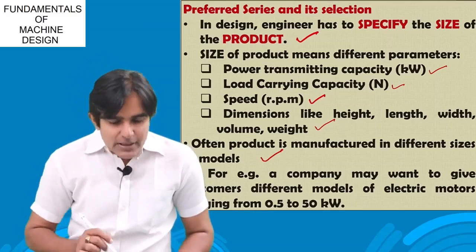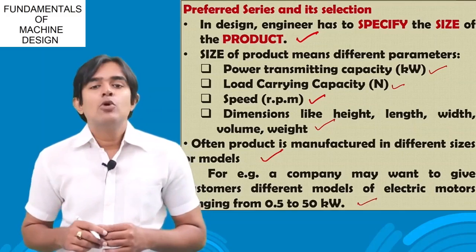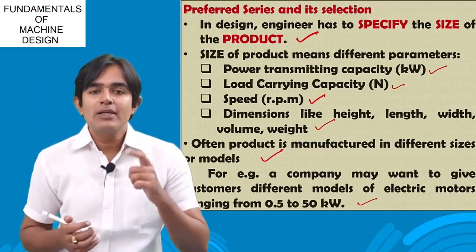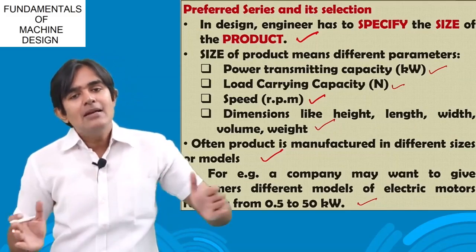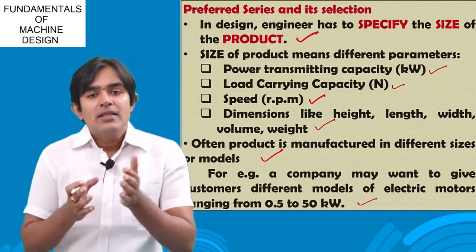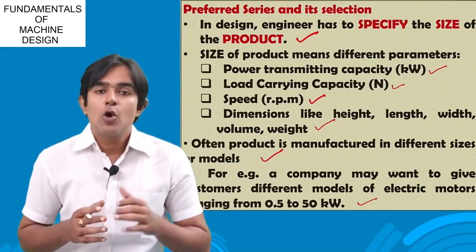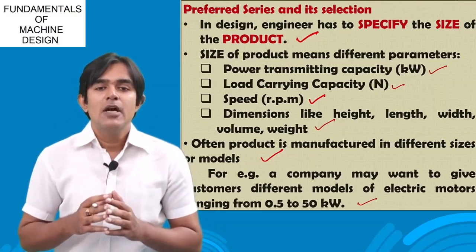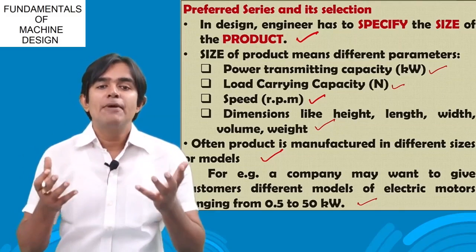A product is manufactured in so many sizes and models. For example, an electric motor with a certain kilowatt capacity rotating at a particular RPM — if I want it between 0.5 to 50 kilowatt, there are going to be N numbers. There are so many products available and I don't want to manufacture all of them because cost will increase. I want only those products to be manufactured which will be used by the customer, and that is done with the help of the preferred series.